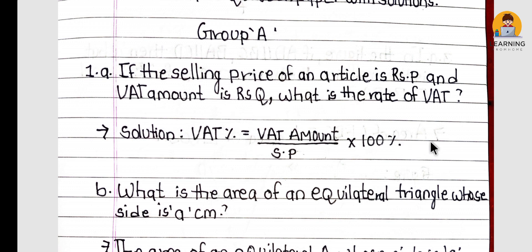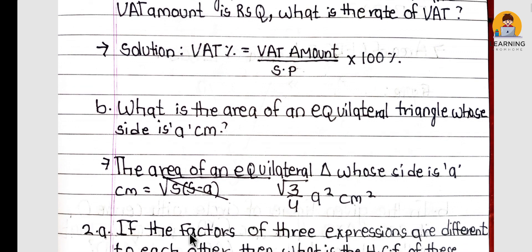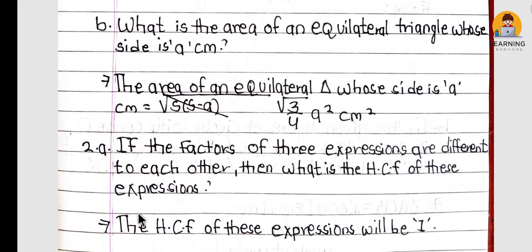Next question: What is the area of an equilateral triangle whose side is 'a' centimeter? The area of an equilateral triangle with side 'a' centimeter is equal to (√3 / 4) × a² square centimeter.